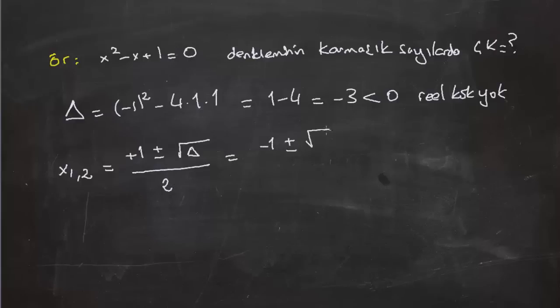(-1 ± √-3) / 2. Şimdi işte burada karmaşık sayılarda öğrendiğimiz şeyi kullanacağız: kök eksi birin i olduğu gerçeğini. (-1 ± √3·√-1) / 2, yani bu da (-1 ± √3·i) / 2 etti.